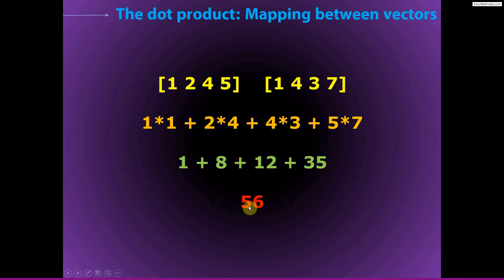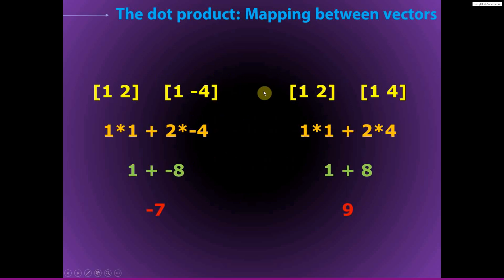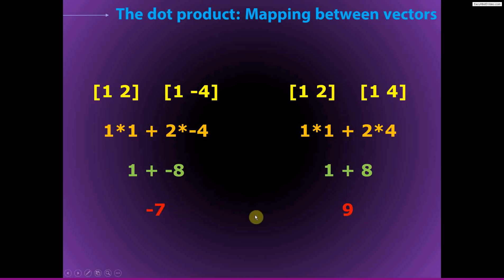The value 56 can be difficult to interpret on its own, but it becomes very useful when interpreted relative to the dot product with other vectors. Here we have two pairs of two-element vectors that are almost exactly the same — the only difference is that one has a negative sign on the 4. Their dot products work out to −7 and +9, similar in magnitude but opposite in sign. To understand why, this is where the geometric interpretation of the dot product becomes useful.